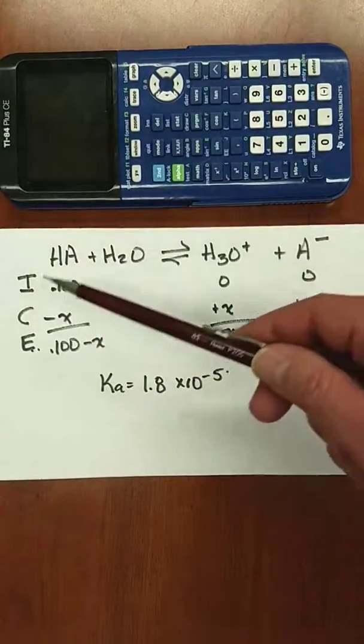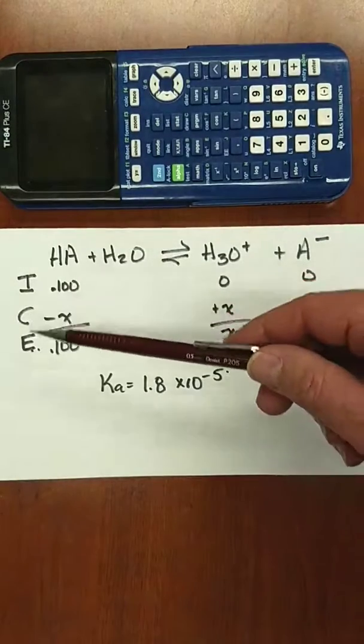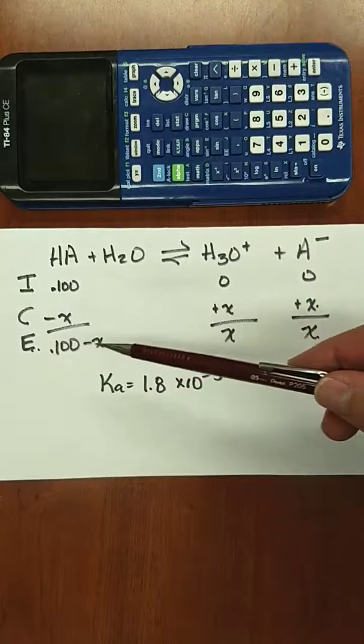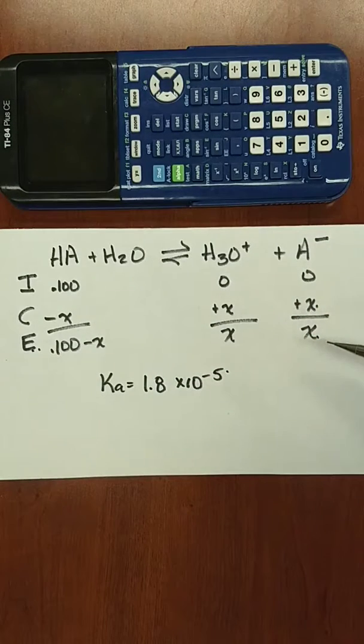Here's an example weak acid reaction, and here's an ICE table where we make our initial change in equilibrium amounts, and we end up with this row in our ICE table.